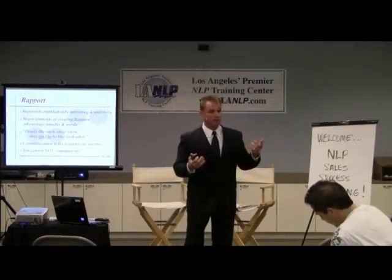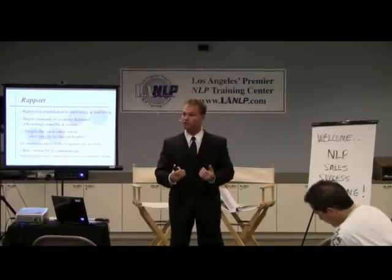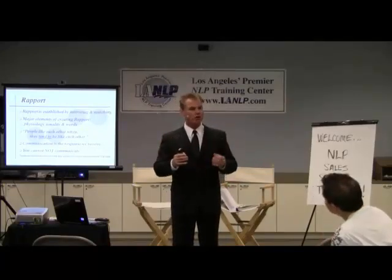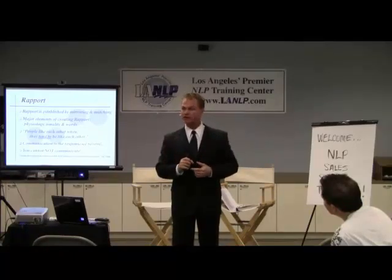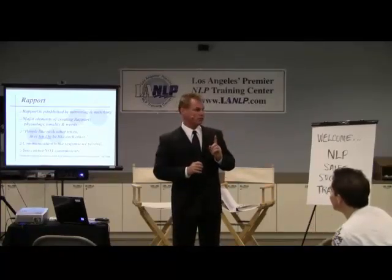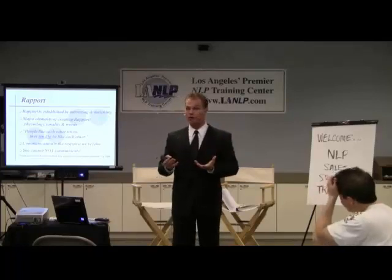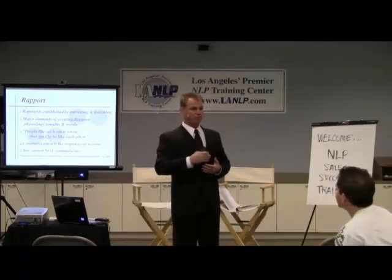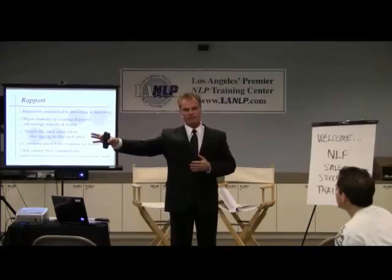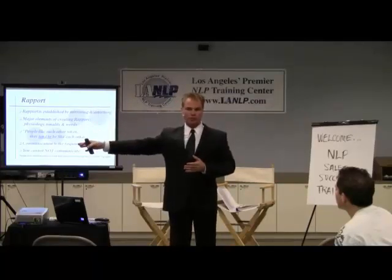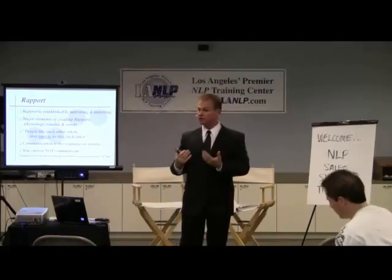Eighty percent of all products and services sold are because of the relationship created — and it doesn't have to be a social relationship; it could be the relationship you have online. A lot of internet marketers now are building massive rapport with people. Frank Kern, working with Tony Robbins, made 24 million dollars in one hour. A lot of that works through affiliate referral programs — John Reese has rapport with his list of 500,000 people, and they'll buy Frank's stuff because they trust John. Rapport has to be there at some level, consciously or unconsciously, for us to buy anything.